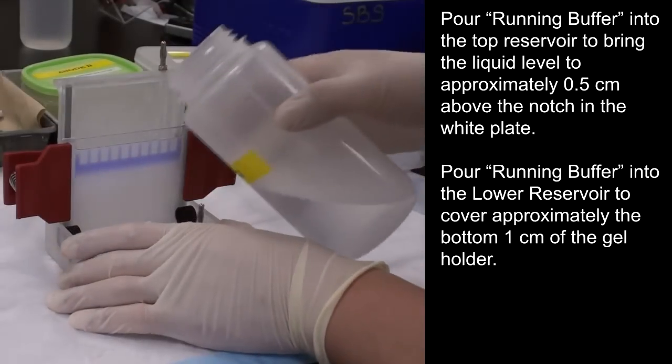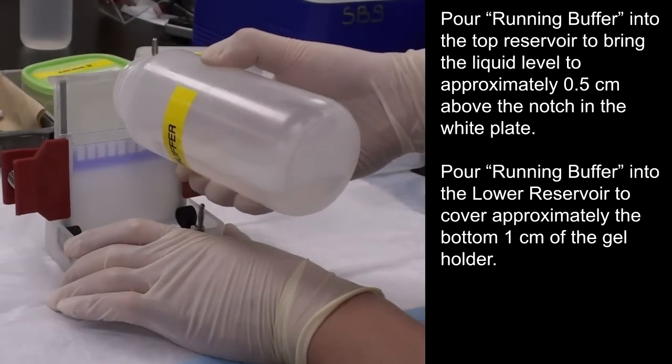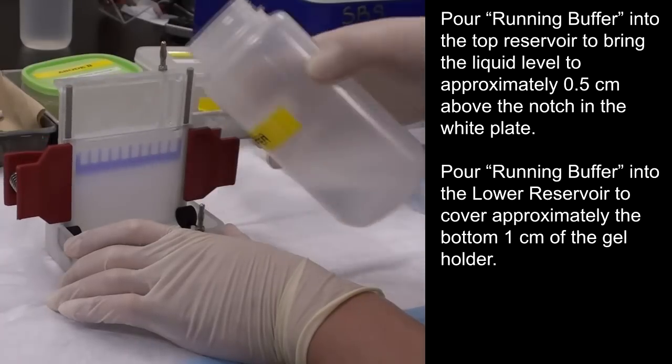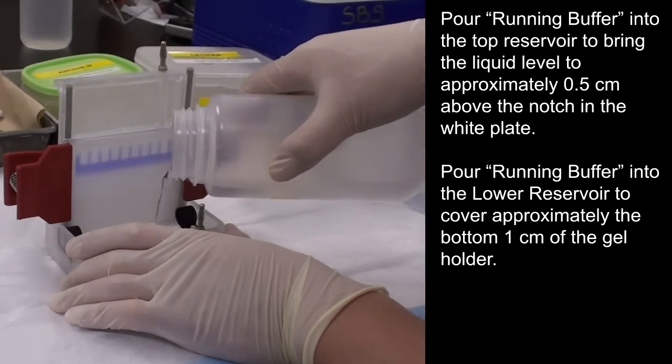Pour running buffer into the top reservoir to bring the liquid level to approximately 0.5 cm above the notch in the white plate. Pour running buffer into the lower reservoir to cover approximately the bottom 1 cm of the gel holder.